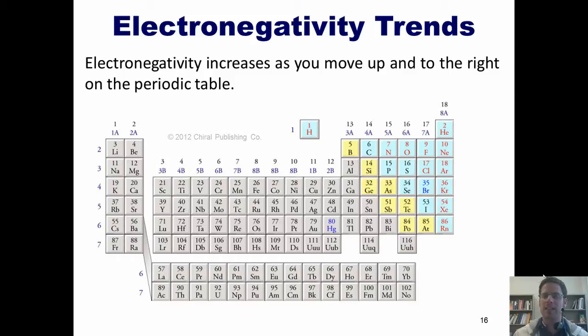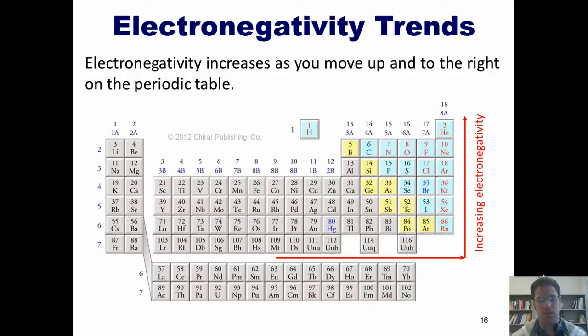As you should already know, electronegativity increases as you move up and to the right on the periodic table. Note that noble gases are excluded. Because they already have a full octet, they don't have a thirst for more electrons.